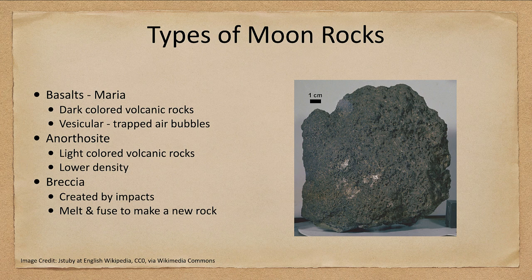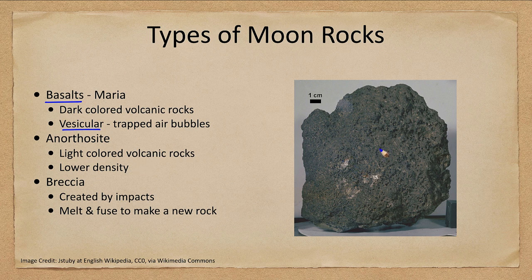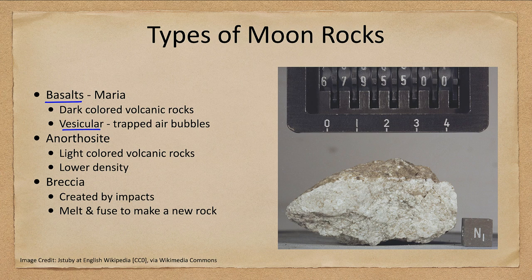Let's look at the different types of rocks we see. In the maria we find basalts — dark colored volcanic rocks that give the maria their distinct dark color. They are also called vesicular, meaning they had trapped air bubbles in them, and you can see that bubbly formation from when the rock was molten lava. In the highlands we see a different type called anorthosite, which is lighter colored and gives the highlands their distinct lighter color. Anorthosite is also a volcanic rock, but it is lower density and older, which is why those regions sit higher.